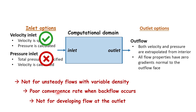Finally, the outflow boundary condition will lead to poor convergence rate when backflow occurs during iterations. If the flow is still developing but the pressure at the outlet is known, a pressure outlet boundary condition would be more appropriate than an outflow boundary condition.